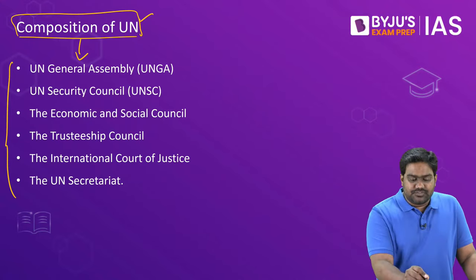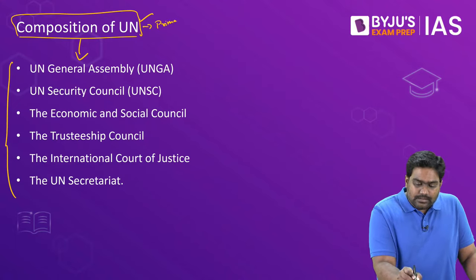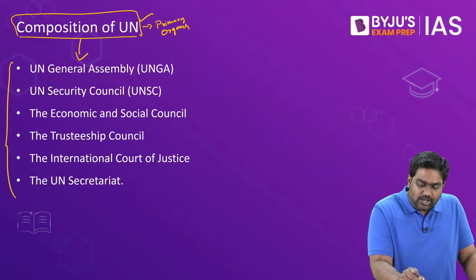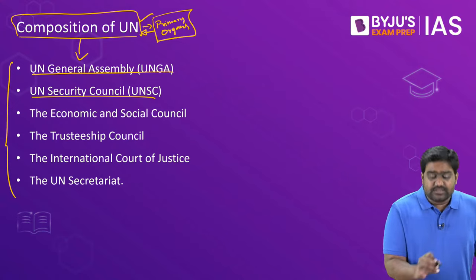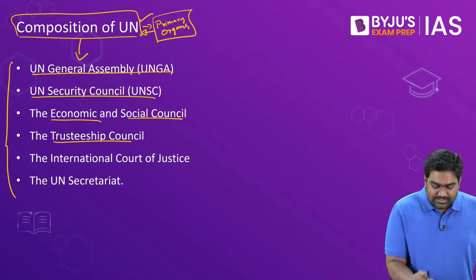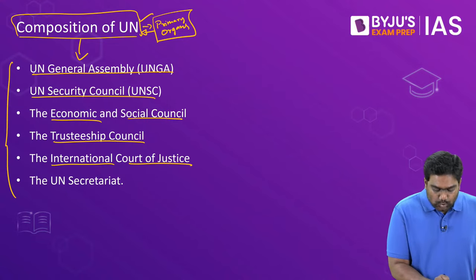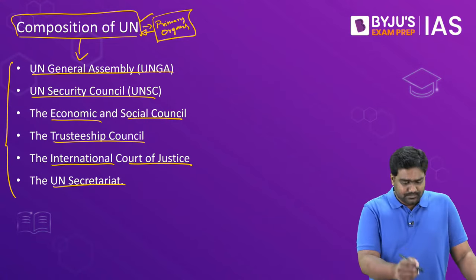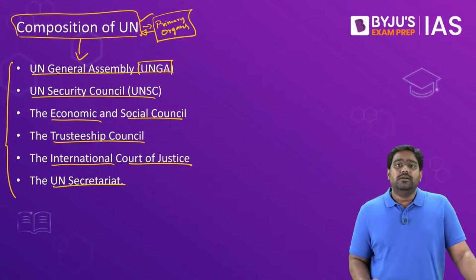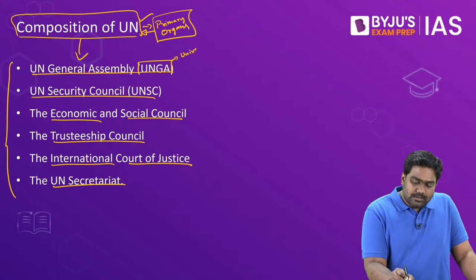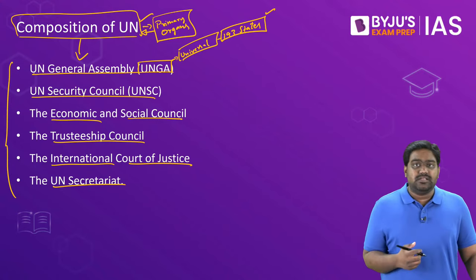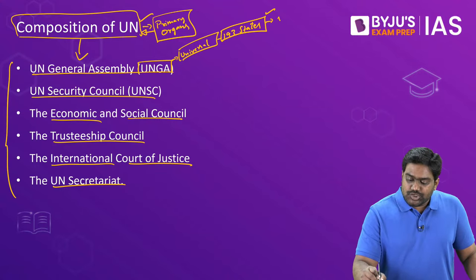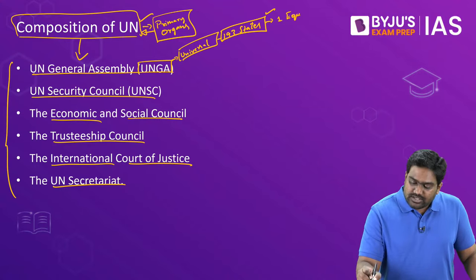These are the primary organs of the United Nations. This includes the UN General Assembly, the UN Security Council, the Economic and Social Council, the Trusteeship Council, the International Court of Justice, and the UN Secretariat. The UNGA — the UN General Assembly — has universal representation. All 193 member states are members of the UN General Assembly. They have all signed and ratified the UN Charter, and they all enjoy one equal vote at the UN General Assembly.